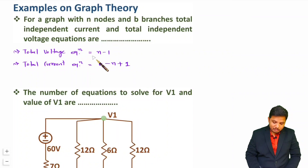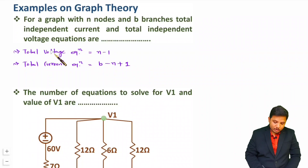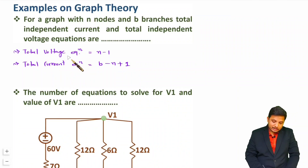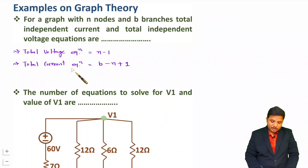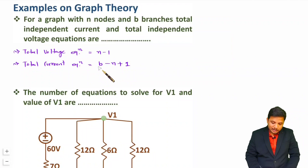These are the basics you must remember for graph theory. Whenever you want to identify how many voltage equations there are, that will be number of nodes minus 1. Total current equations — you can say fundamental loop current equations — will be total branches minus nodes plus 1.